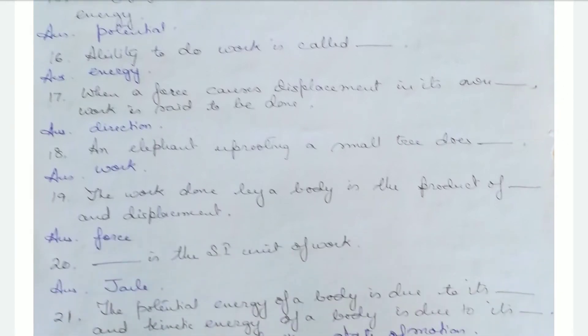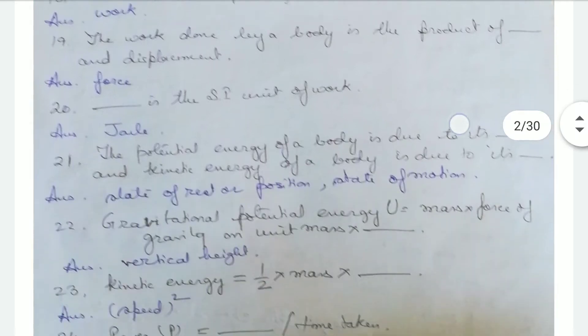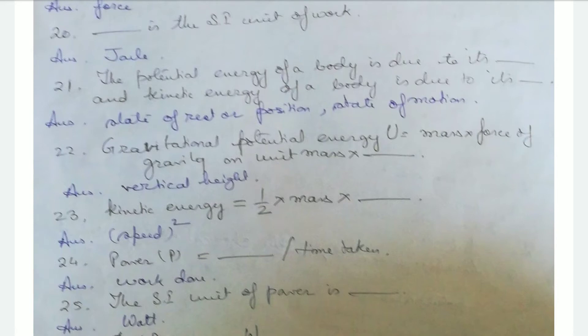An elephant uprooting a small tree does work because it is moving the tree from one place to another. The work done by a body is the product of force and displacement. Joule is the SI unit of work. The potential energy of a body is due to its position, and kinetic energy is due to its state of motion. Gravitational potential energy U = mass × g × vertical height. Kinetic energy = ½ × mass × speed².